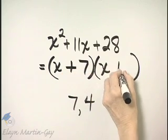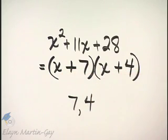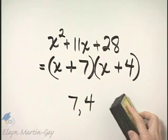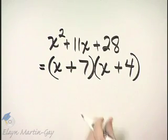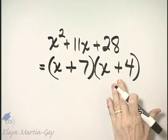And I have x plus 7 times x plus 4. It makes no difference in order here. I could have written x plus 4 times x plus 7. Makes no difference because multiplication is commutative and associative. So here is my factorization.